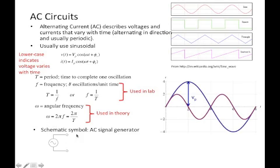And so this right here is the schematic for an AC signal generator. Now it could be a sine wave, square wave, triangular wave, or a sawtooth wave.